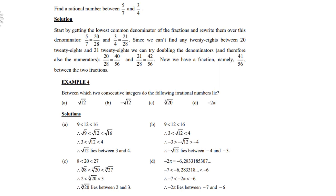Let's look at the example. Find a rational number between 5 over 7 and 3 quarter. Start by getting the lowest common denominator of the fraction and rewrite them over this denominator. Like 5 over 7 is the same as 20 over 28, for instance. 3 quarter is the same as 21 over 28.